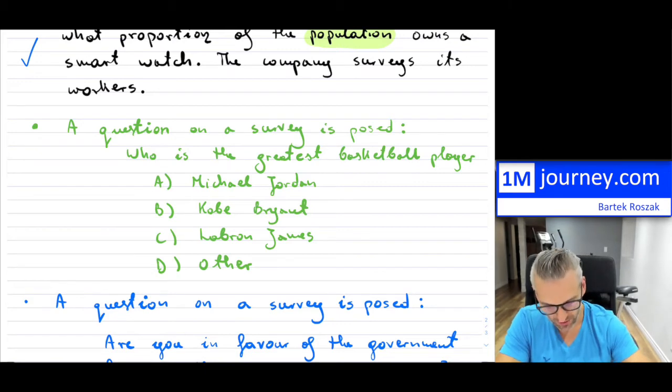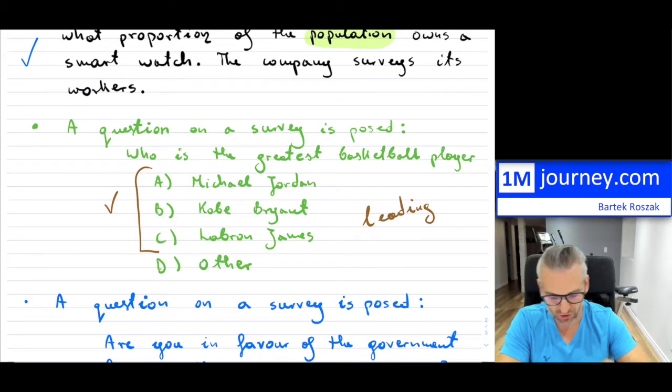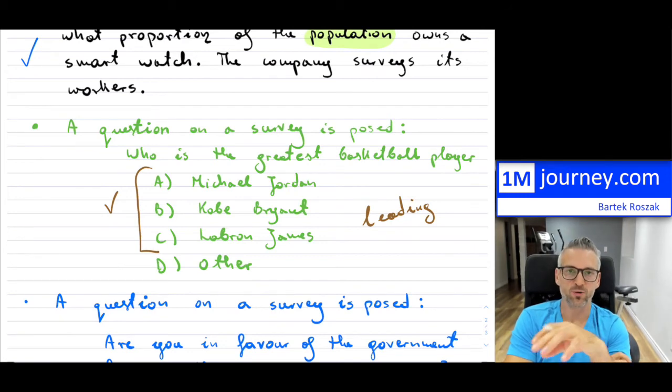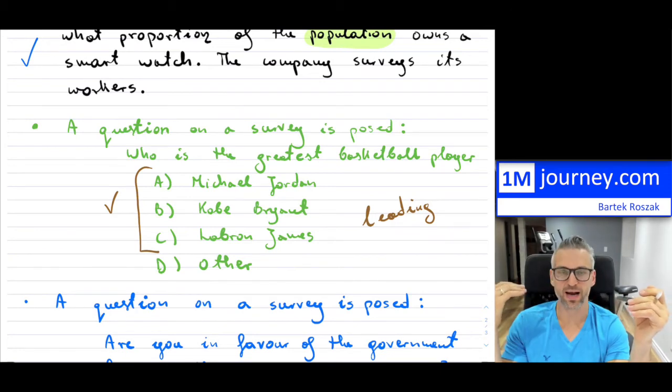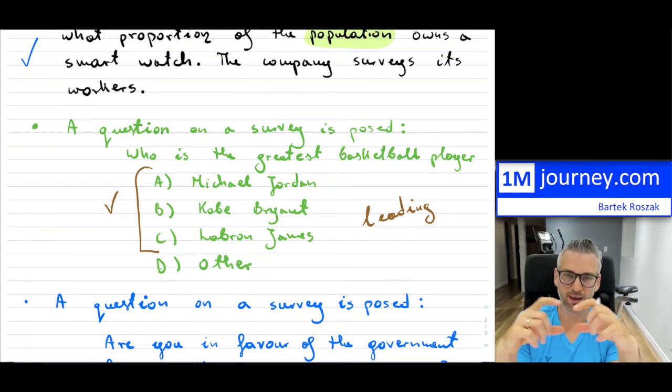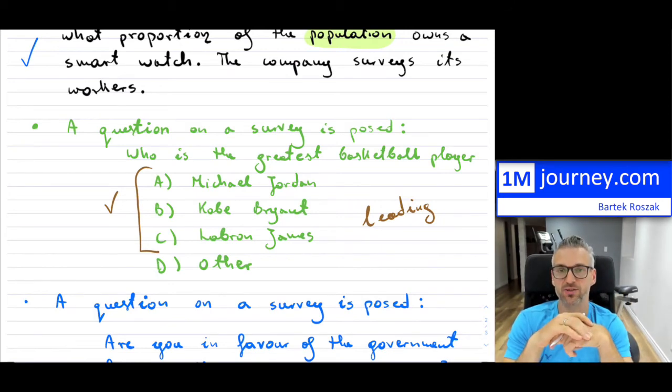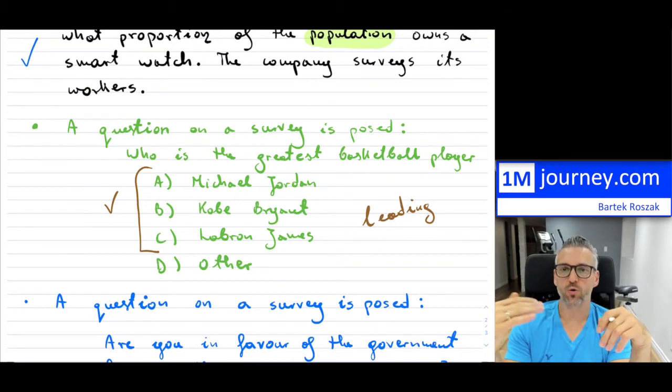So this question is a leading question. It leads you in a particular direction and sways your result towards these three basketball players. So you almost kind of anchor yourself to these. Now, if they were asked who's the best player from these three, great. But if you want the greatest basketball player of all time, basketball players can go much further back than just Michael Jordan. And I'm sure that there's many others that people disagree that it's just these three. So it's almost like you can leave a blank to make it not as biased and not lead, not provide a leading question so that it sways people to vote in a particular way.